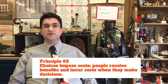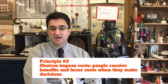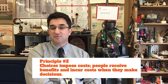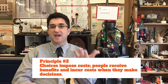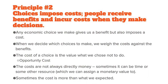Principle number two: our choices impose costs and benefits. We receive benefits and incur costs in any economic choice we make, and we have to weigh those benefits against the costs. Choosing to take this class online perhaps has benefits, like you can do it at any point during the week, but it has costs, like you lose face-to-face interactions with the teacher. The way you measure the cost of a choice is you measure the value of what you gave up.